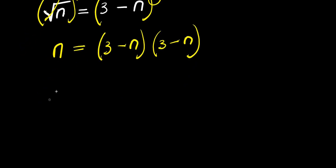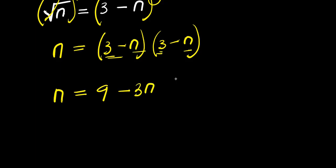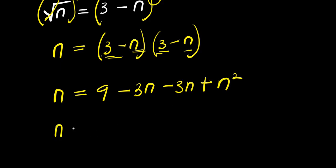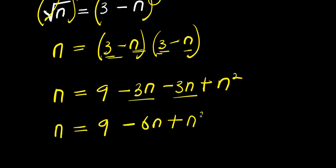From here I'm going to expand: n equals 3 times 3, which is 9, then 3 times negative n is minus 3n, minus n times 3 is minus 3n, and minus n times minus n is n squared. So we have n equals 9 minus 6n plus n squared.